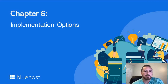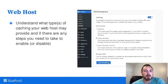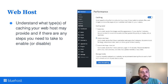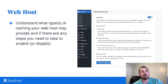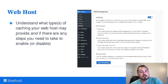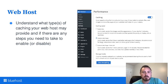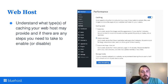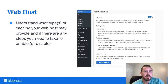Let's look at implementation options. First, be careful not to implement multiple caching mechanisms of the same type. It's important to understand what your web host offers and identify any gaps. If your site is on Bluehost, there is a caching plugin — the Bluehost plugin — with a performance section where you can choose caching levels. It handles several types of caching based on your selections. Be aware of what your web host provides, as each host may or may not offer caching options.